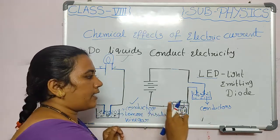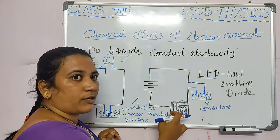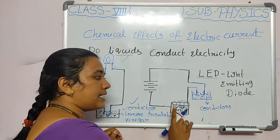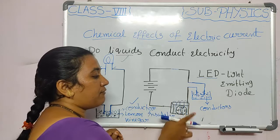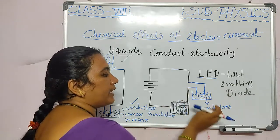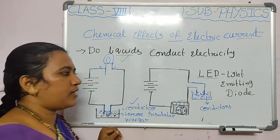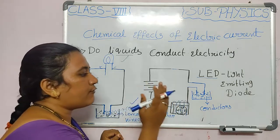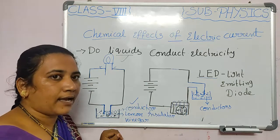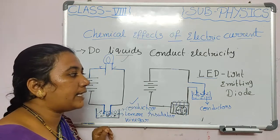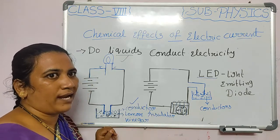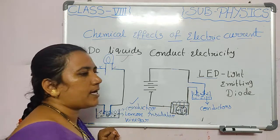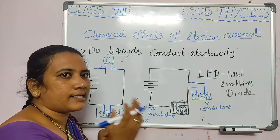When electricity passes through the circuit, the magnetic needle shows deflection — turning either east or west. This deflection indicates the liquid is a conductor. If the liquid is an insulator, the needle will not change its direction and no deflection occurs. This type of tester gives us a very clear and correct idea about conductors and insulators.